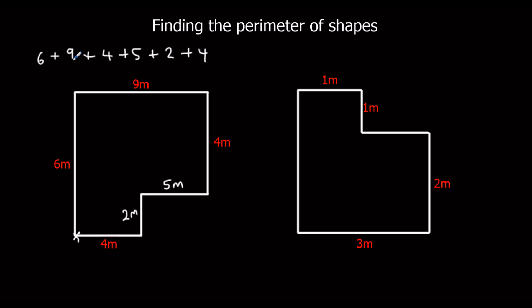So then we just have to add them up. 6 plus 9, 15, plus 4, 19, plus 5, 24, plus 2, 26, plus 4, 30. So 30 meters for this one. That's the perimeter.